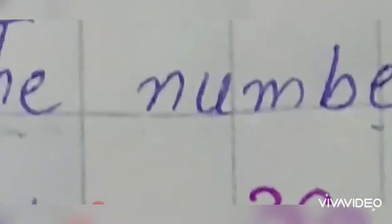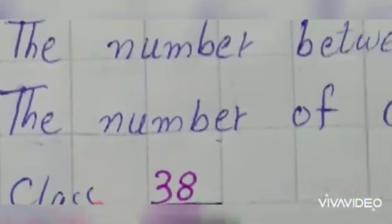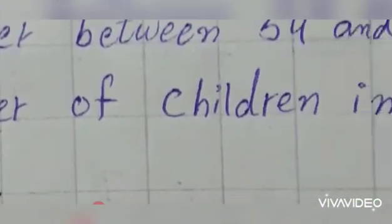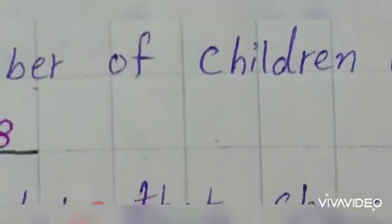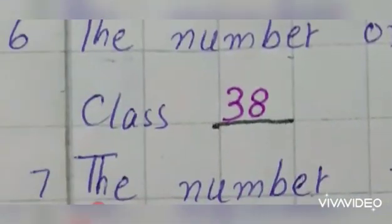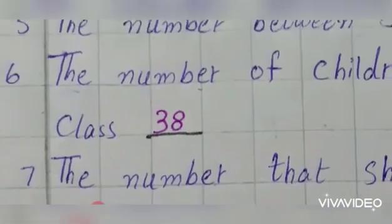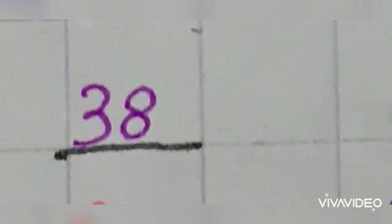Number 6: The number of children in your class. Aapki class mein students kitne hain? Total students — 38.